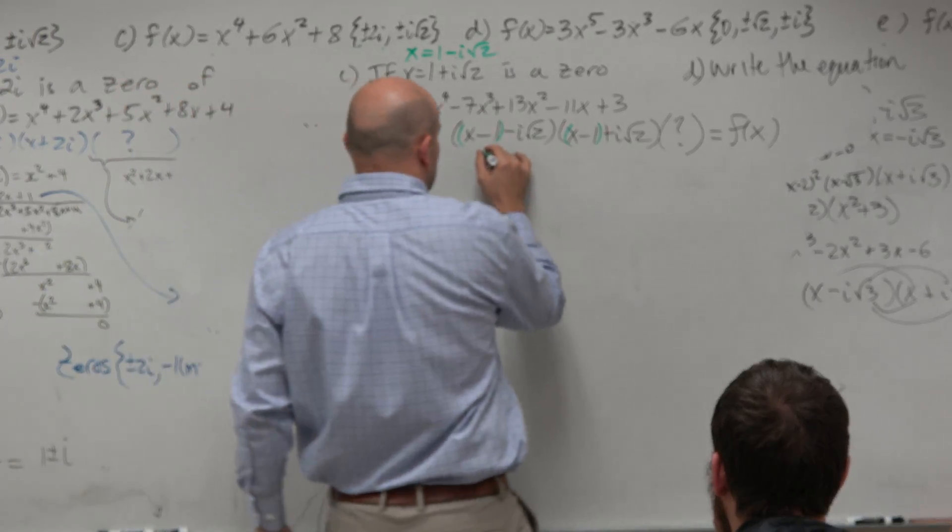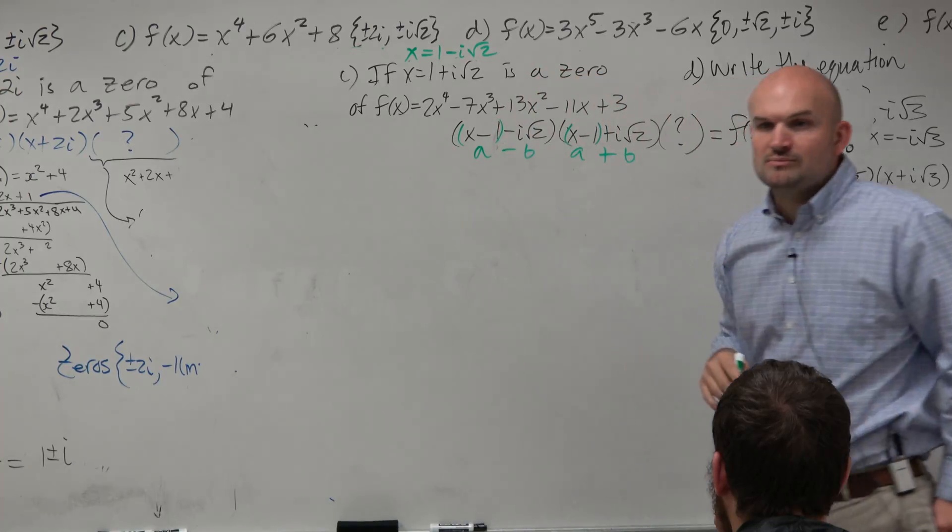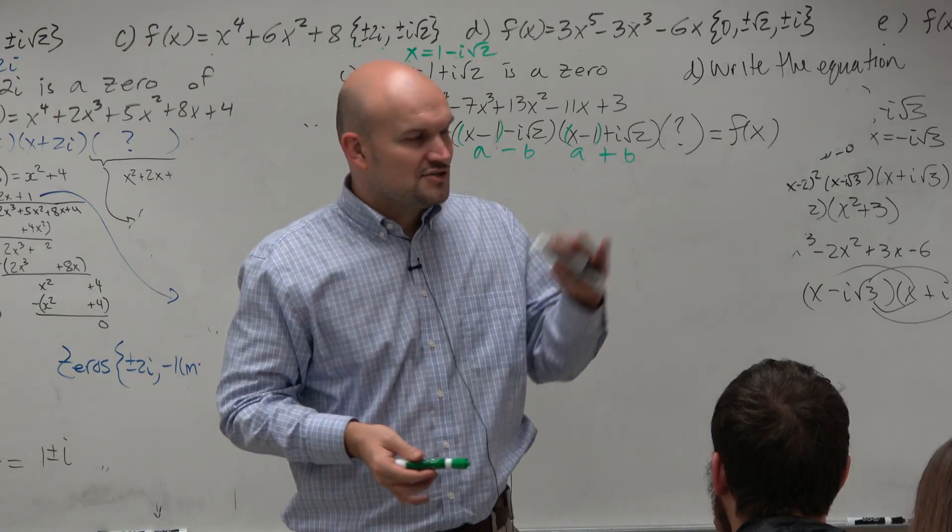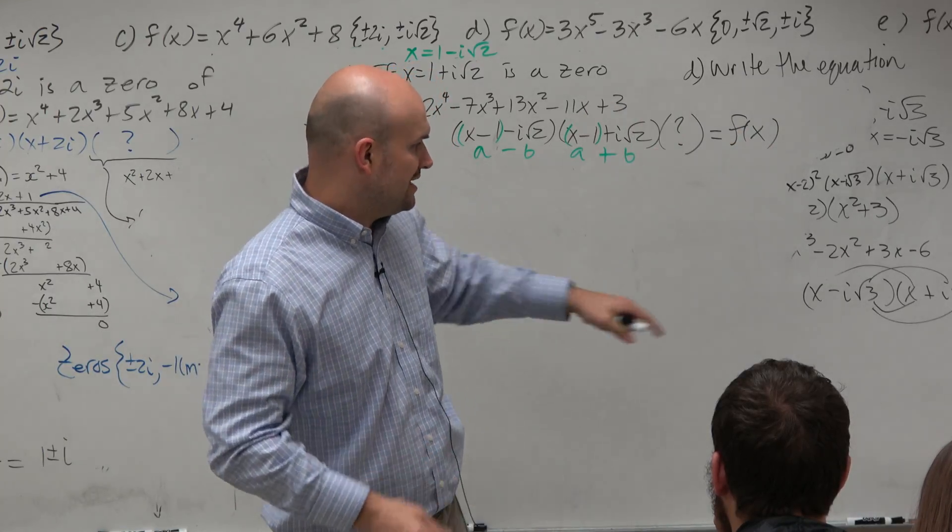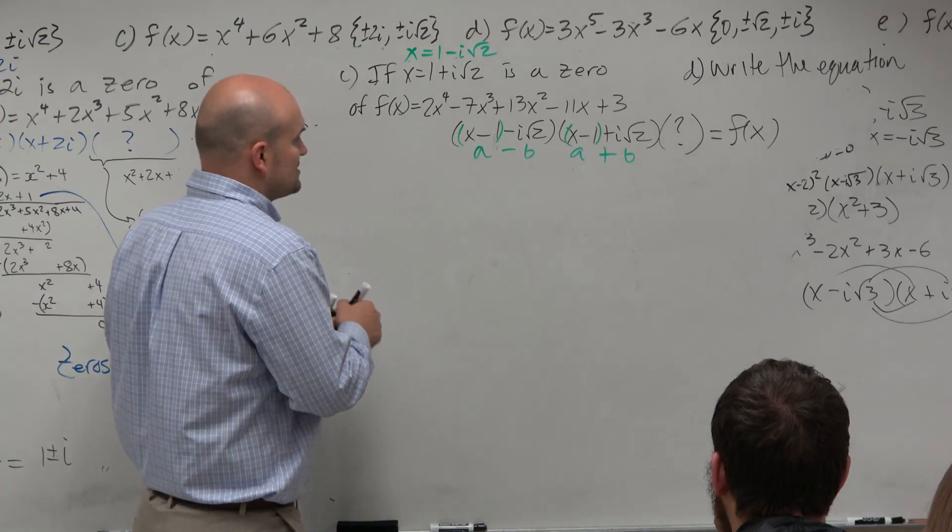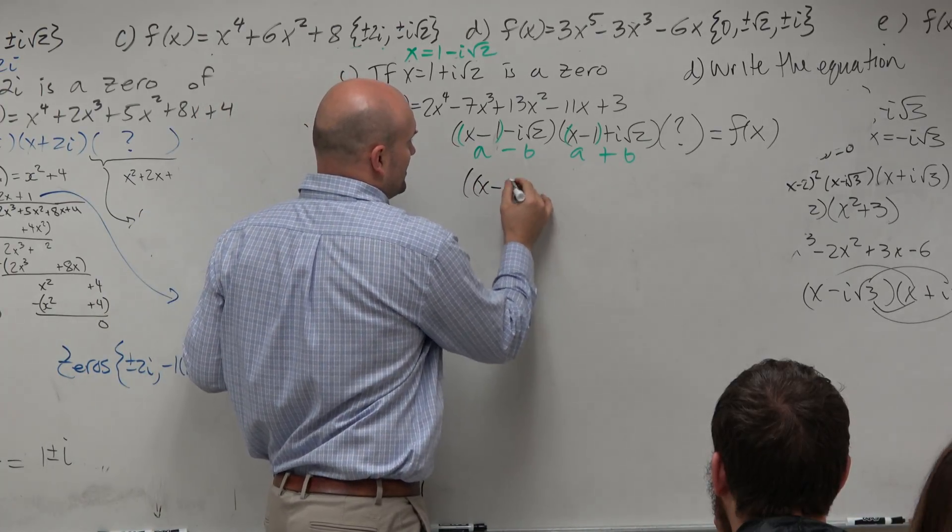But what I want you guys to recognize is you can group these first two terms. And then what you guys see, it's just like the difference of two squares. Your first two terms are the same and your last two terms are the same, but it's plus or minus. So rather than doing distributed property like you have to do here, you can just square the first two terms and square the last two terms and take the difference. So therefore, this is x minus 1 squared.